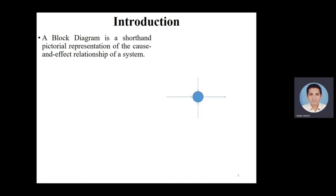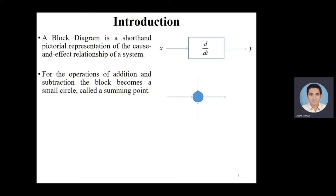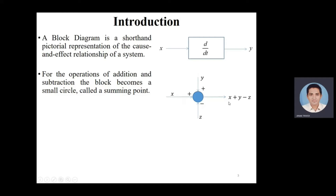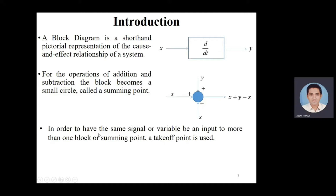A Block Diagram is a shorthand picture or representation of the cause-and-effect relationship of a system, like x related to y with d/dt. For the operations of addition and subtraction, the block becomes a small circle called a summing point, for example x plus y minus z. In order to have the same signal or variable be an input to more than one block or summing point, a takeoff point is used — in this case the same signal x is used as input to more than one block.